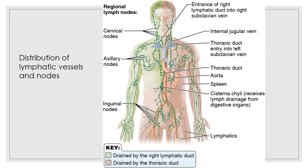This image shows the distribution of the lymphatic vessels and nodes. Lymph is transported from the lymph capillaries through successively larger lymphatic collecting vessels until it is finally returned to the venous circulation through two large ducts in the thoracic region. The right lymphatic duct drains lymph from the right arm and right side of the head and thorax, and the large thoracic duct receives lymph from the rest of the body. Both ducts empty the lymph into the subclavian vein on their respective side.